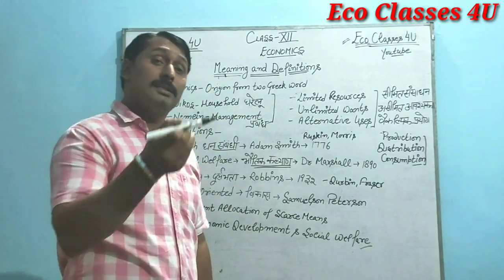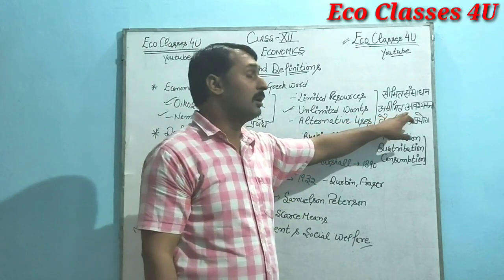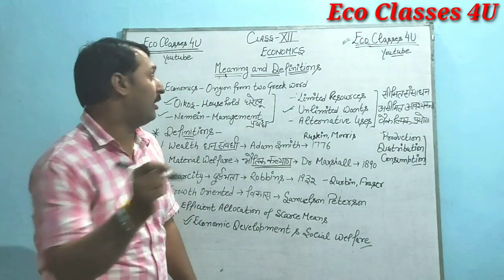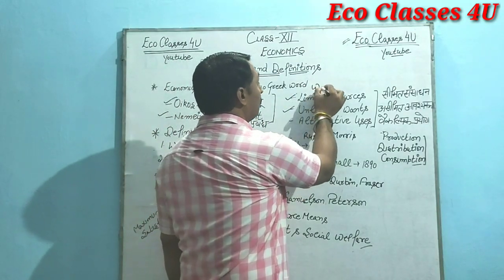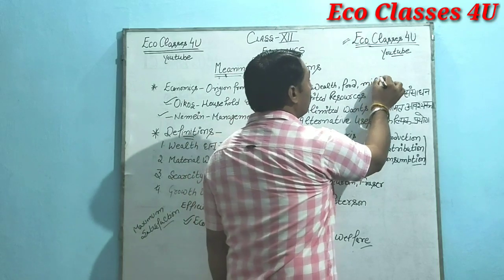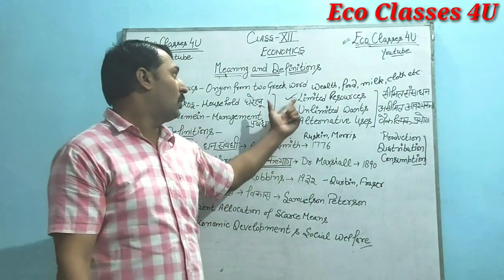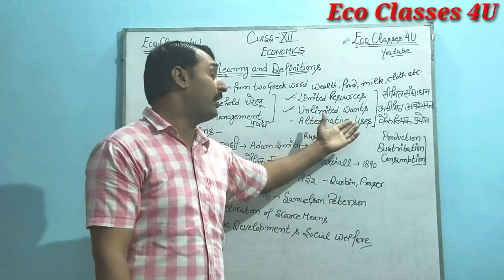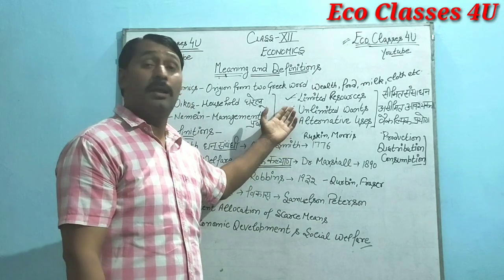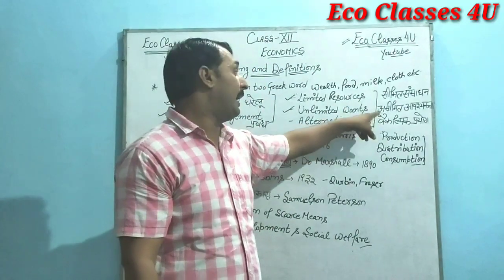Ab isko thoda aur samajhte hain. Kisi bhi aatmi ki aavashyakta hoti hai jo hai — that is unlimited. Aatmi ki asimit aavashyaktaen hoti hain, aur un ki purti karne ke liye jo humare paas saadhan hain — resources hain — that are limited. Limited resources such as wealth, food, milk, clothes, etc. Aur jitne bhi paas limited resources hain, that have alternative uses — un resources mein se we have to use the best alternate use.